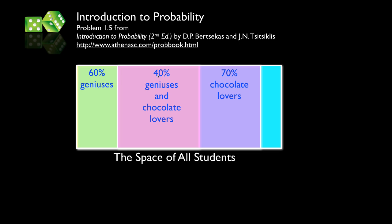For instance, if we had been told the overlap was 30%, I would have moved the chocolate lovers over by another 10% or so. If it were 50% overlap, I would have moved it the other way. What's left — the unshaded region — represents students who are neither geniuses nor chocolate lovers, and going through the simple math, that region is 10% of the space of all students. Now I'd like to show a way to work this out mathematically using rules from set theory and probability theory.